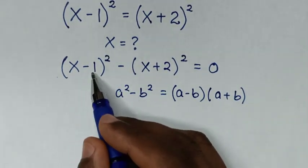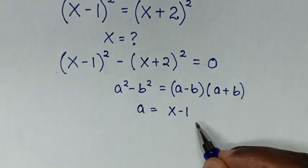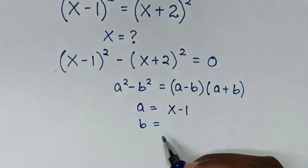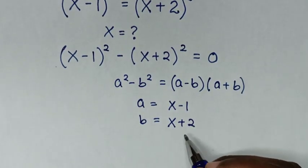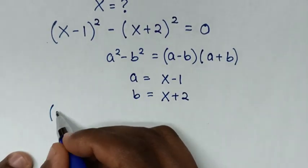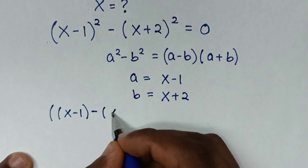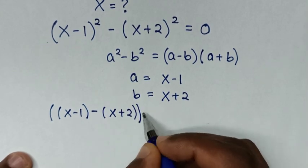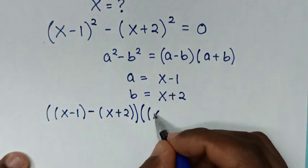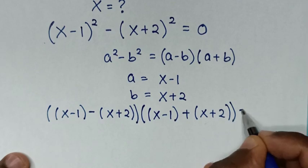Comparing a squared with (x minus 1) squared, we get a equals (x minus 1). Comparing b squared with (x plus 2) squared, we get b equals (x plus 2). So a minus b is (x minus 1) minus (x plus 2), and a plus b is (x minus 1) plus (x plus 2), giving us [(x minus 1) minus (x plus 2)][(x minus 1) plus (x plus 2)] equals 0.